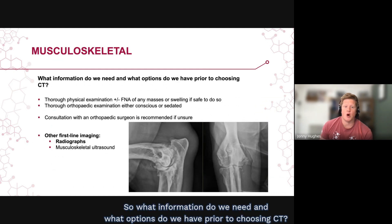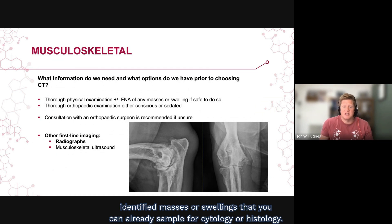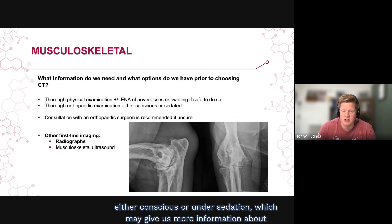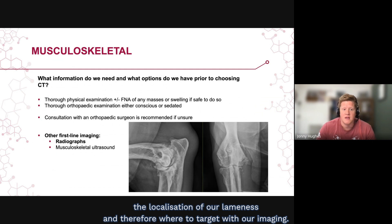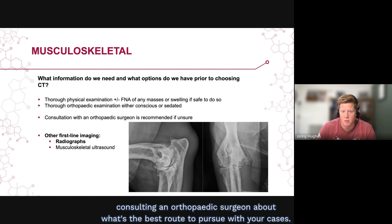What information do we need and what options do we have prior to choosing CT? A thorough physical exam is absolutely essential. You may have already identified masses or swellings that can be sampled for cytology or histology. We also need to include the orthopedic examination — either conscious or under sedation — which may help localize the lameness and therefore where to target with imaging. If unsure, it's always worth consulting an orthopedic surgeon about the best route to pursue.